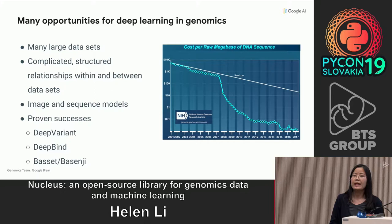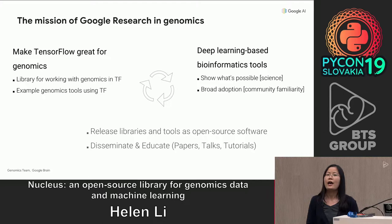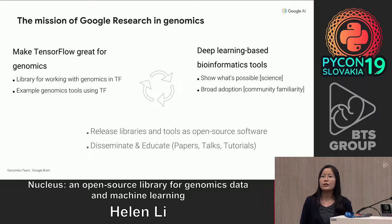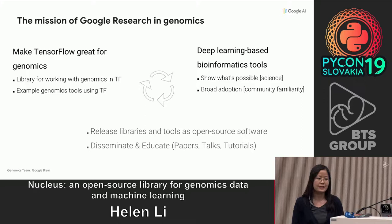DeepVariant is one such example. It is a tool that our group developed to identify small variants in the population using convolutional neural networks. Our goal in genomics is multifaceted. First, we want to make TensorFlow great for genomics, and we do so by developing libraries to make it easy to work with genomics data. We are also interested in using deep learning-based tools to push the boundaries on some scientific questions. Lastly, we want to make all of these publicly available for use by the community.